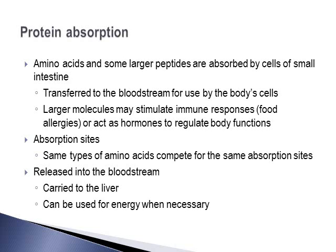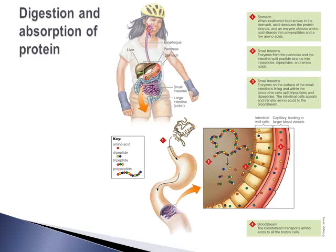Once amino acids are absorbed, they're released into the bloodstream and carried to the liver, where they'll be used for their various roles in the body. They can also be used for energy when necessary, though protein is not a preferred energy source. This figure from the textbook does a great job describing protein digestion and absorption, broken down into picture form.